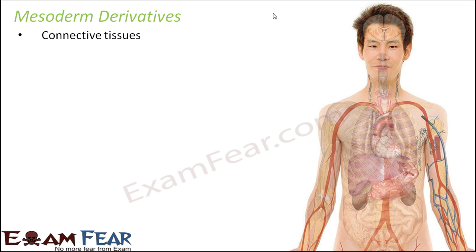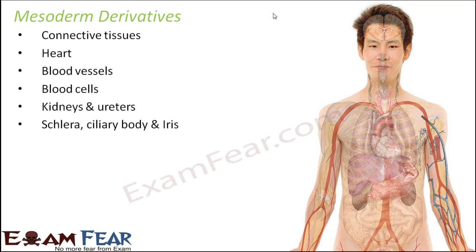Next are mesoderm derivatives. Mesoderm forms connective tissue, heart, blood vessels, blood cells, kidneys and ureters, sclera (the white outer layer of the eyeball), ciliary body and iris. The ciliary body consists of muscle-like structures called ciliary muscles that control the shape of the eye lens. Mesoderm also forms the cortex of the adrenal gland — the gland that produces hormones like adrenaline and steroids. All of these body organs or parts are derived from mesoderm.